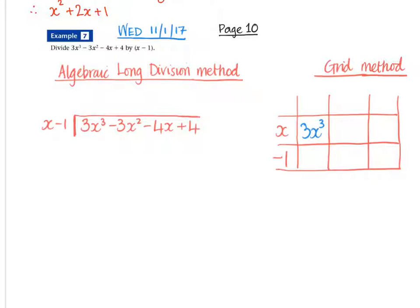On to page 10 in the booklet, please. Just a little bit of a reminder of both methods. It's the algebraic long division I'll show first of all, and then the grid method.